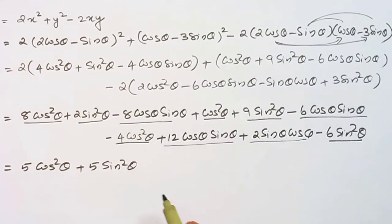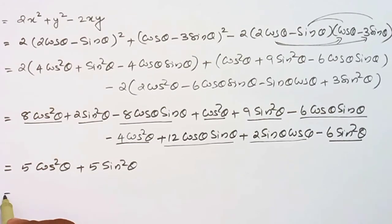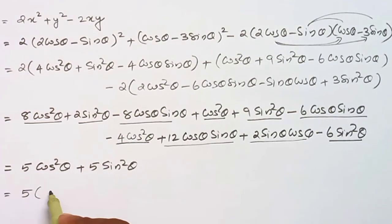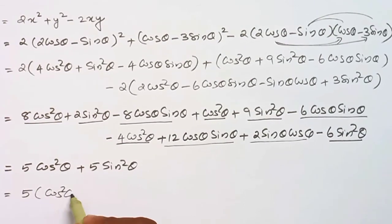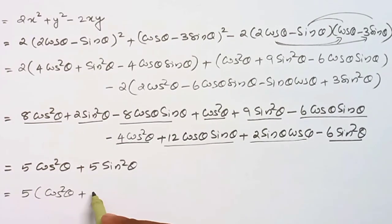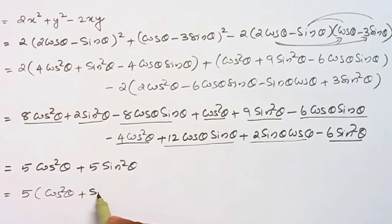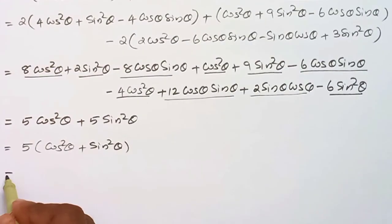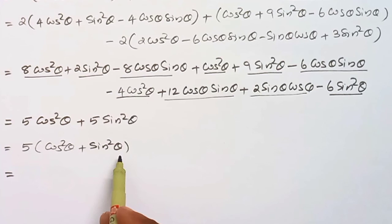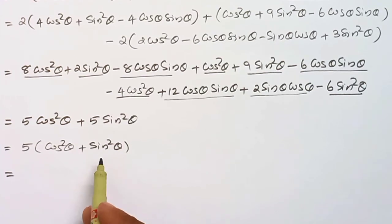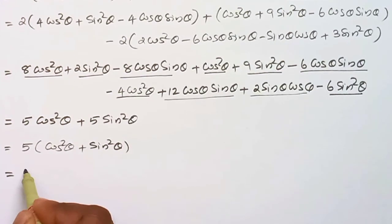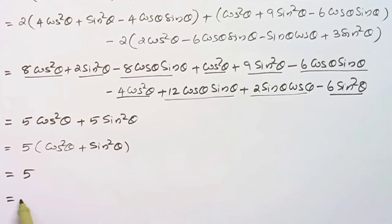So all the cosθ sinθ terms are 0. This is equal to 5cos²θ + 5sin²θ, which equals 5 into (cos²θ + sin²θ) = 5 into 1, that will be 5, which is equal to RHS.